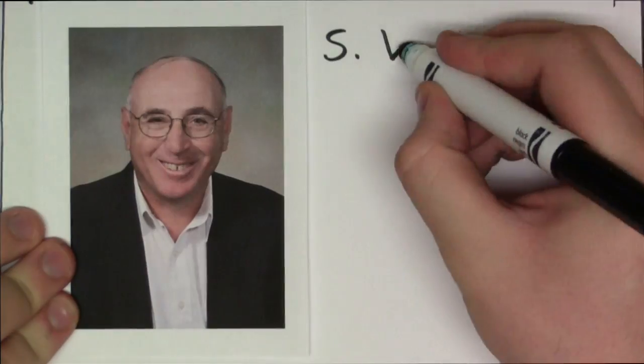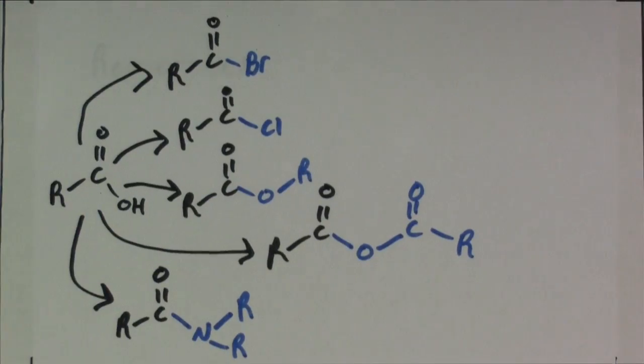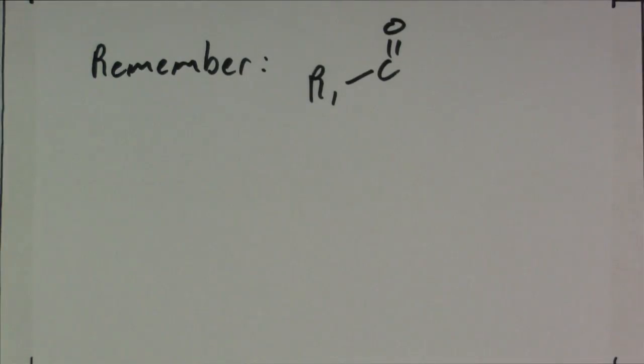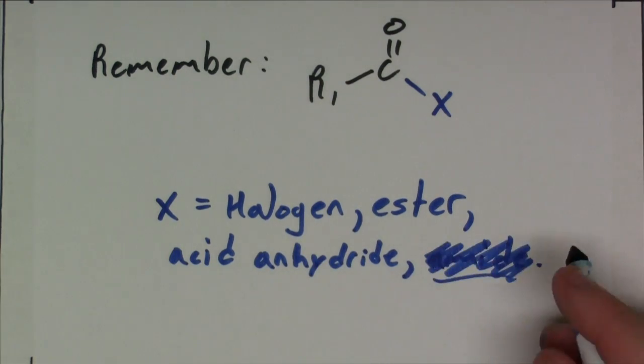This approach was discovered by Steven Weinreb in 1981, and this process could be done with any number of carboxylic acid derivatives: halogens, esters, acid anhydrides, and amides. But not so much amides.